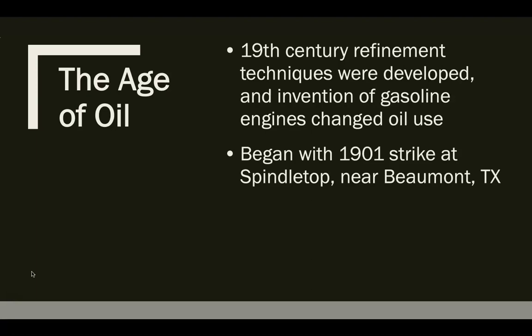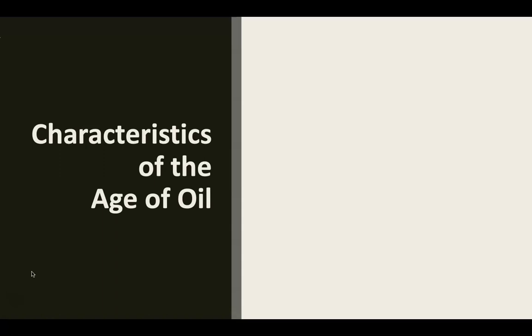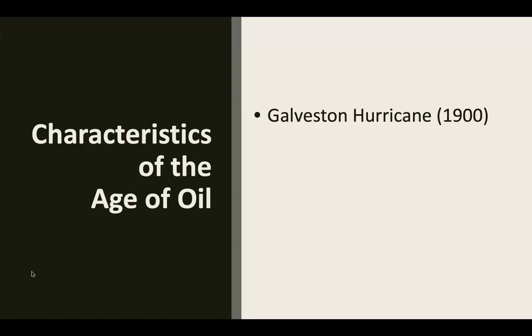The Age of Oil began in 1901 with the strike at Spindletop near Beaumont, Texas. It launched large-scale oil production and wide availability of petroleum products. Some characteristics of the age of oil: the Galveston hurricane is considered to have occurred during the age of oil.